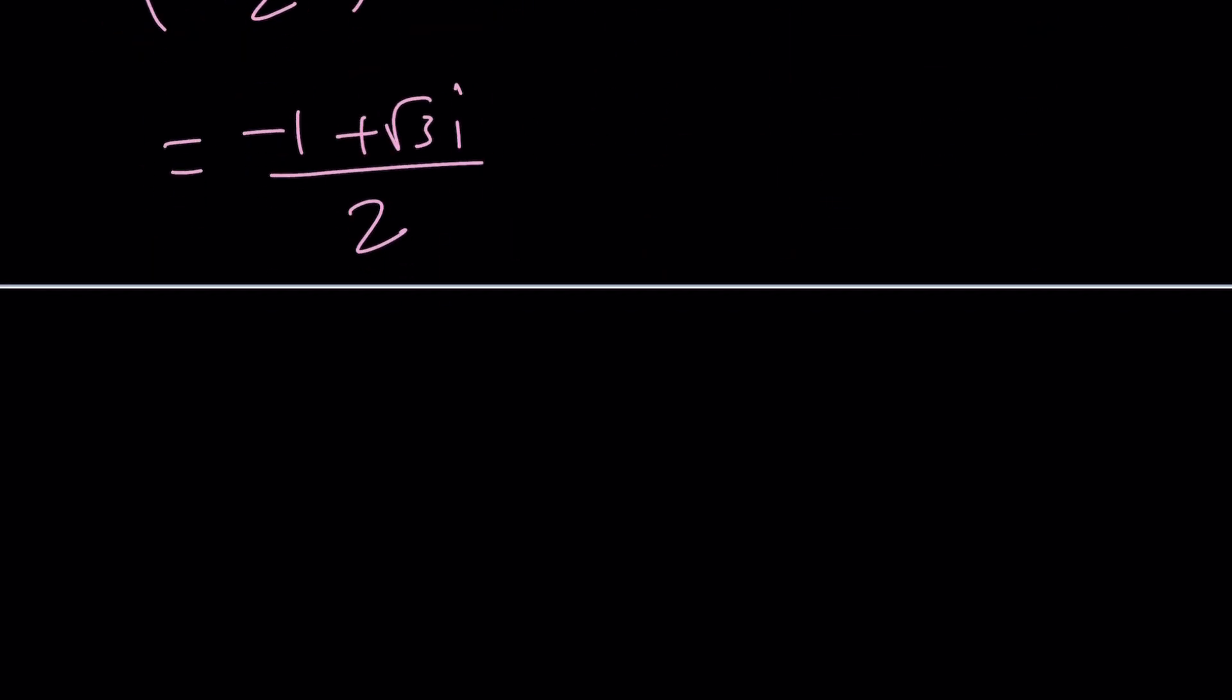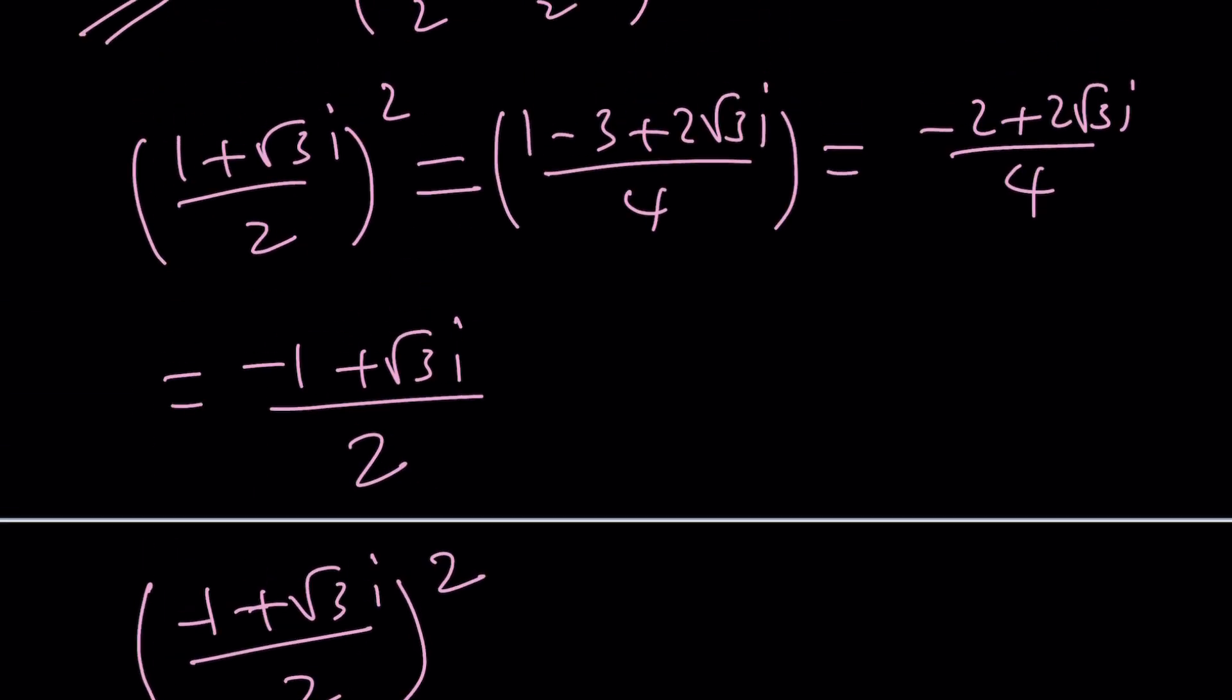So 2 didn't work because it didn't give us 1. You can square this number one more time to get the fourth power but you'll soon realize that it's not actually going to give us 1. But one thing to keep in mind is when you square it you kind of got the opposite of the conjugate.